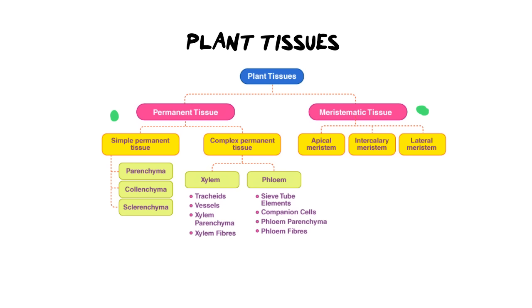That permanent tissue can be things like parenchyma, colenchyma, sclerenchyma — and I'm going to go through all of those soon — as well as the vascular tissues, which are xylem and phloem.